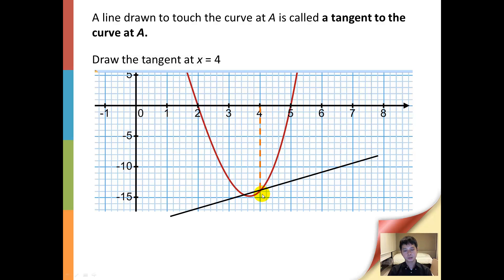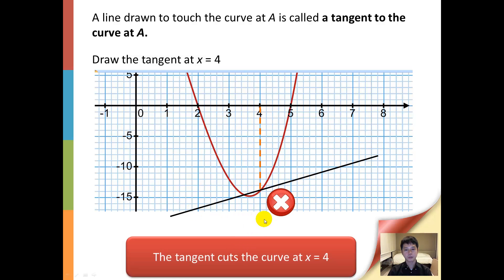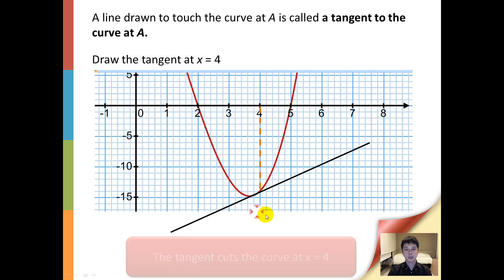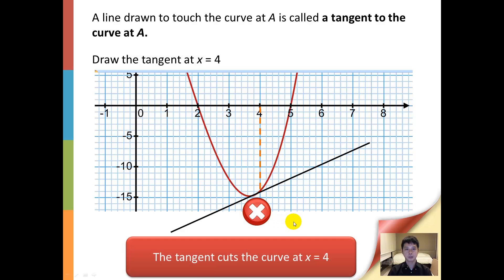Now what about this? Instead of touching it at one point, it actually cuts through x equals 4, and therefore this is not a tangent. And what about this? Similar to the previous example, it also cuts through a series of points here, and therefore it is not acceptable.